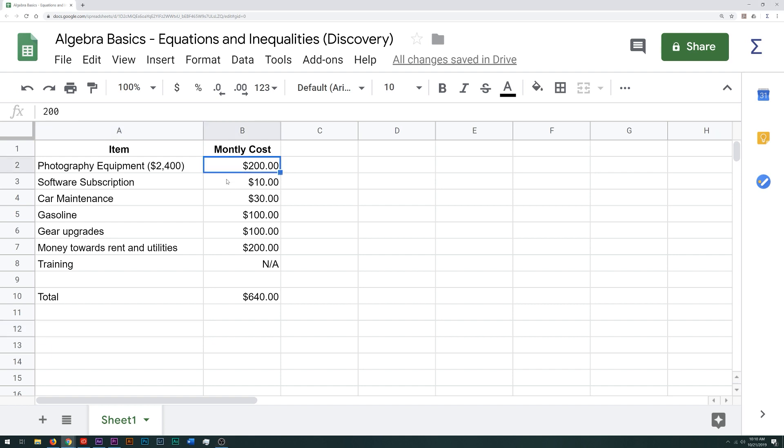The software I use to edit the photos is $10 a month. Car maintenance, which is just oil changes and all that stuff, comes in at about $30 per month. Gasoline is $100 per month. You want to have some money set aside for gear upgrades, and I wanted to put away about $100 per month for that. And honestly, it only makes sense to do this if I'm making some extra money, so I needed to make $200 towards rent and utilities to make this venture worthwhile.